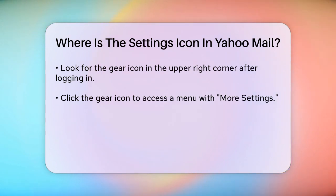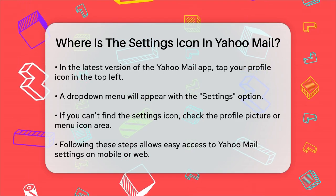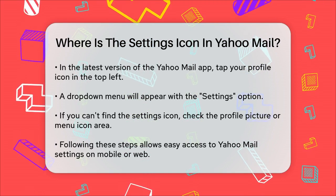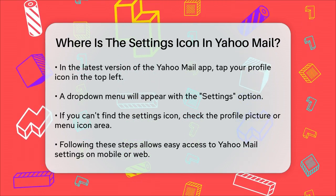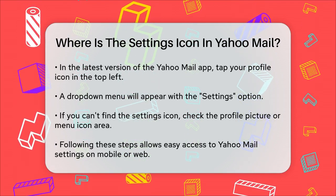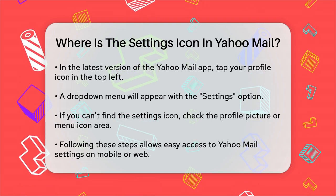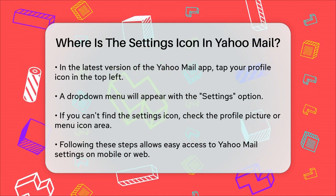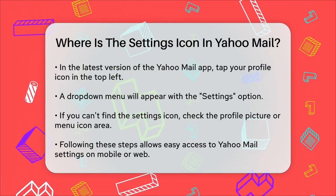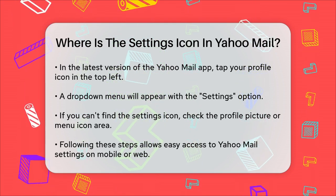In case you're having trouble finding the settings icon, especially on newer devices or updated versions of the app, make sure to check the profile picture or menu icon area, as the settings option is typically hidden within these menus. By following these steps, you'll be able to access and adjust your Yahoo Mail settings easily, whether you're on a mobile device or using the web version.